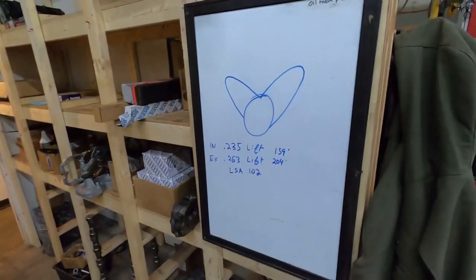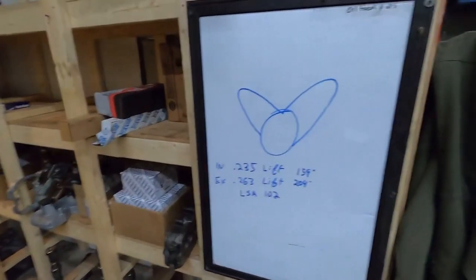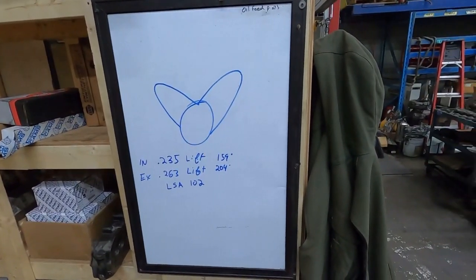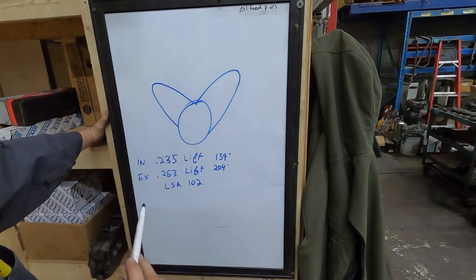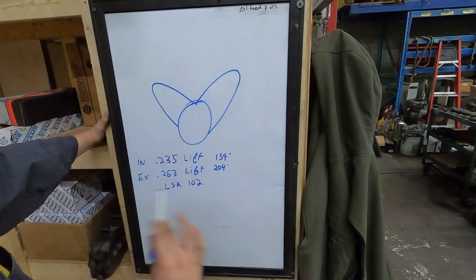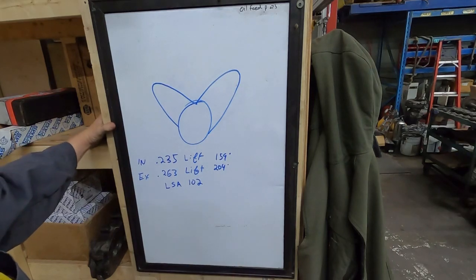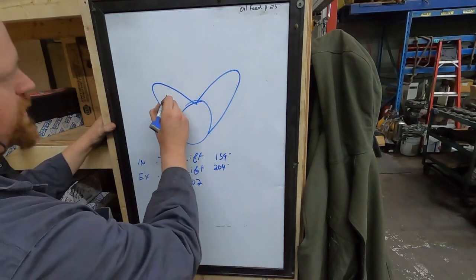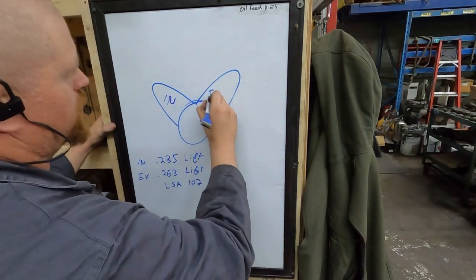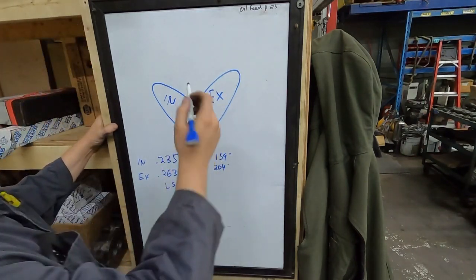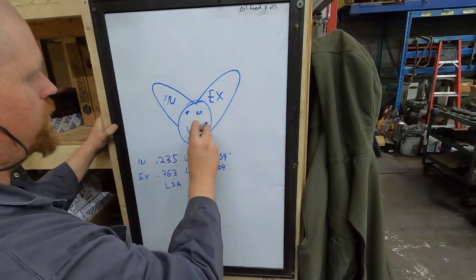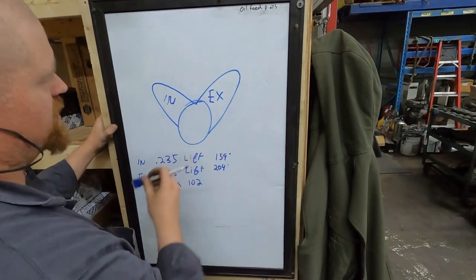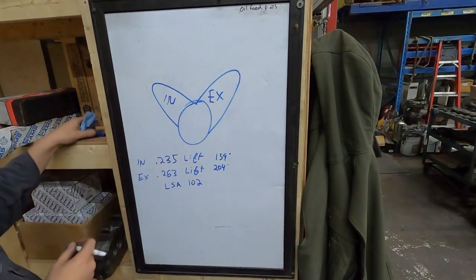We're going to talk about a camshaft from a P-Pump 12 valve. We'll just use that for instance, because that's what I got here. So the lift on it, on the intake, is 235. One day I'll learn how to write. Nah, actually, probably not. So that's the intake lift. And then the exhaust, I should have wrote this on there first, I guess. 263 lift.